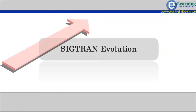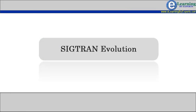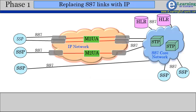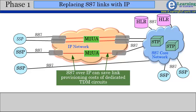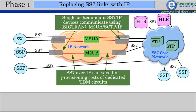Now we will discuss the phase-wise evolution of SIGTRAN in legacy SS7 networks. Phase 1 of SIGTRAN involves replacing the costly SS7 TDM links with IP and introducing signaling and voice gateways for necessary conversion. In the first phase, the SIGTRAN protocol M2UA over SCTP and IP was deployed. The primary benefit was cost saving.